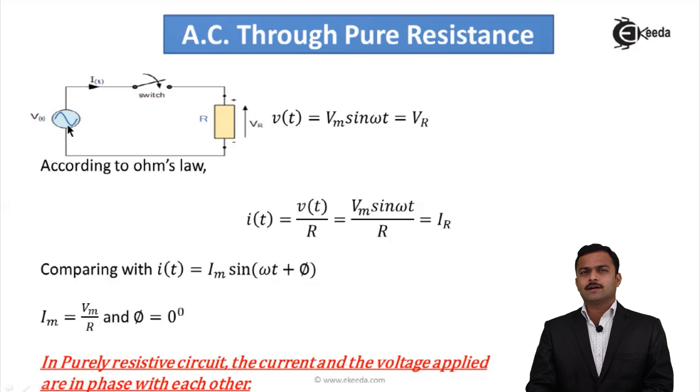So V(t) equals VR. According to Ohm's law, the current flowing through the circuit will be total voltage divided by total resistance. So I(t) equals V(t) divided by R. V is given by Vm sin(ωt), so if I substitute I will get Vm sin(ωt) divided by R, which I can say is the current flowing through the resistance.